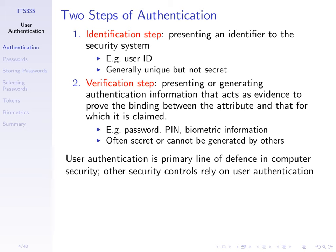The user name is generally unique within the system but not necessarily secret. The security of the system should not depend upon the secrecy of user names. For example, if your user name is your email address, many people know it. The identification step is simply making the claim: 'I claim to be this person.' The next step — the verification step — is presenting information such that the computer system can verify that you are who you claim to be. That's commonly a password, a personal identifying number, or biometric information such as a fingerprint or eye scan.